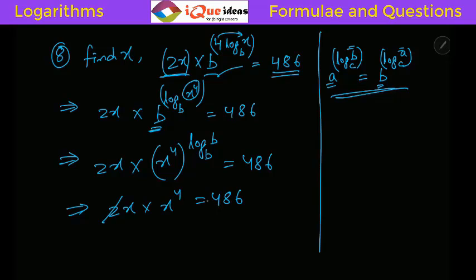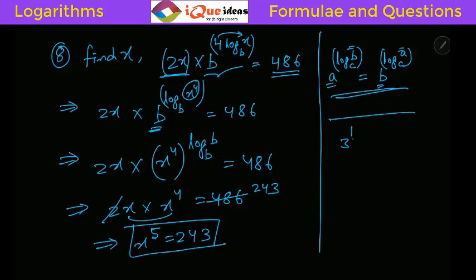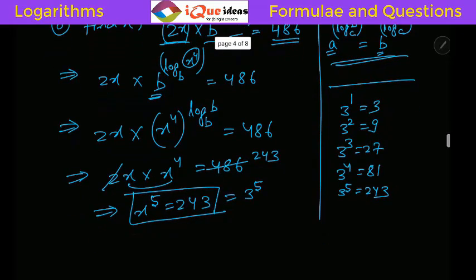Dividing both sides by 2 gives 243. Then x times x^4 becomes x^5 equals 243. Factorizing 243: 3^1=3, 3^2=9, 3^3=27, 3^4=81, 3^5=243. So 243 equals 3 raised to 5, which tells us clearly that x equals 3.